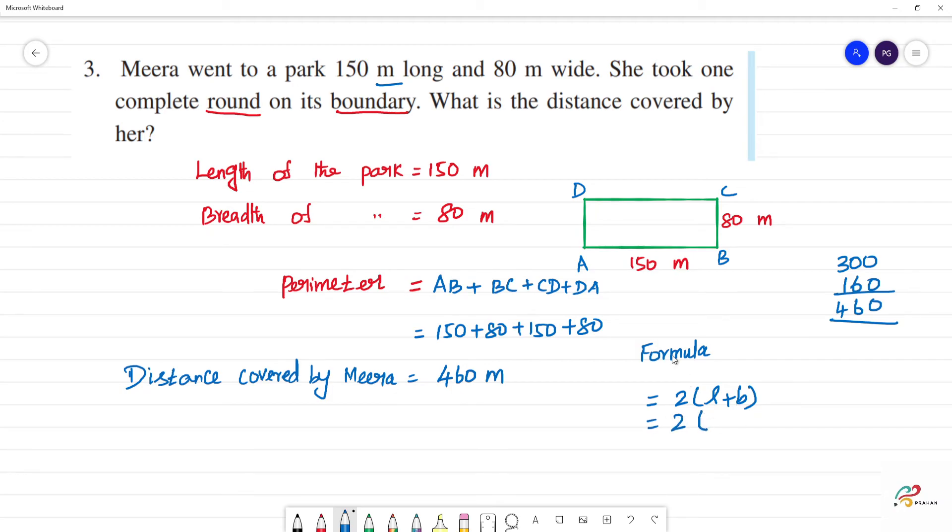We are using 2 into 150 plus 80. What is 150 plus 80? 230. So 2 into 230 is 460 meter. So both are same.